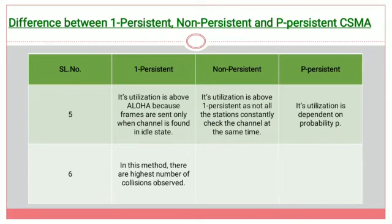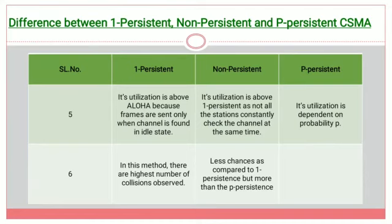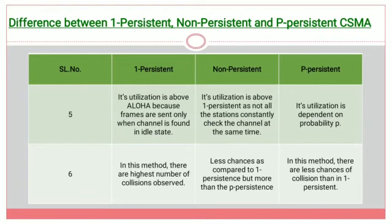In one persistent CSMA, the highest number of collisions are observed. In non persistent, there are fewer collisions compared to one persistent, but more than p persistent. In p persistent CSMA, the number of collisions is the least — fewer than both one persistent and non persistent.